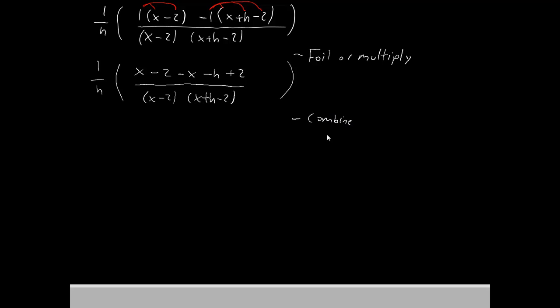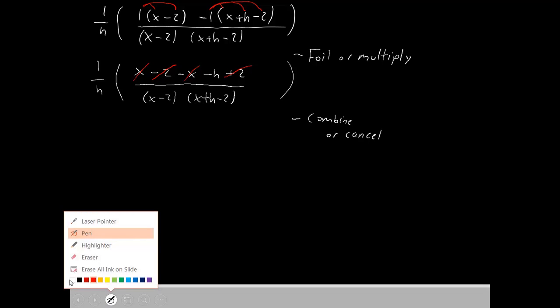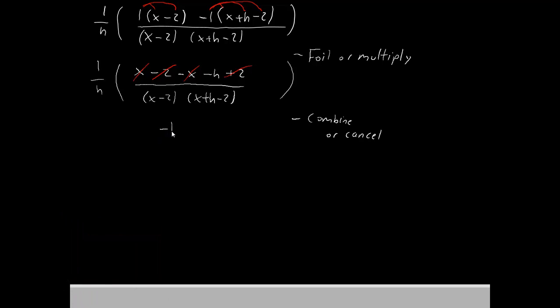Now that everything's outside of the parentheses, we can either combine like terms, or hopefully cancel things out to make this look a little nicer. Well, you may notice that we have a positive x right here, and a negative x right here. Those can cancel out. We also have negative 2 and positive 2. Those cancel out as well. That leaves us with just negative h divided by x minus 2, x plus h minus 2. And it is still times 1 over h.